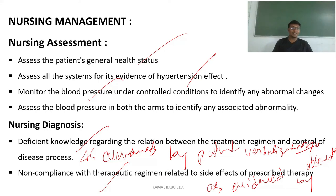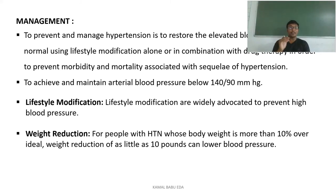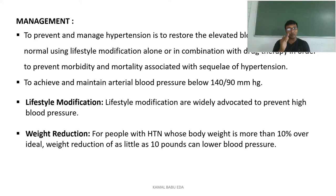The management goals are to prevent and manage hypertension, restore normal blood pressure through lifestyle modifications combined with drug therapy, prevent morbidity and mortality associated with hypertension, and achieve and maintain arterial blood pressure below 140/90 mmHg. Lifestyle modifications are widely used to prevent high blood pressure. For weight reduction, people with hypertension often weigh 10% more than ideal body weight; reducing as little as 10 pounds (10 kg) can lower blood pressure.